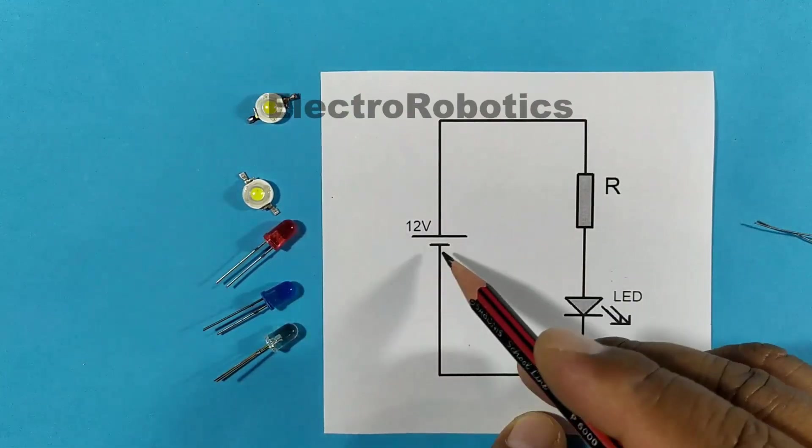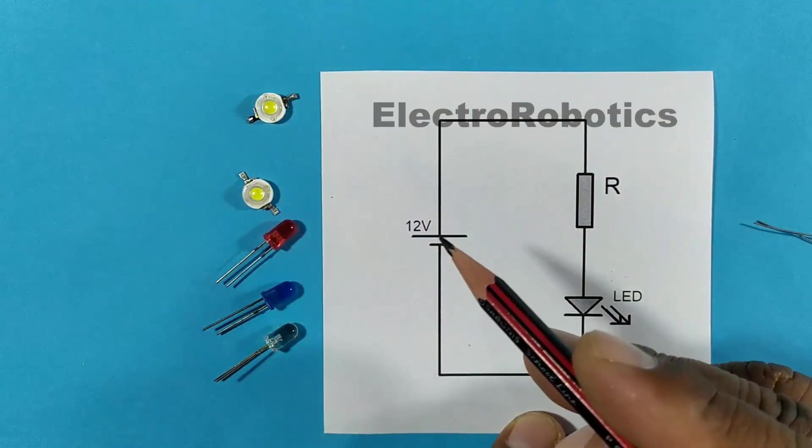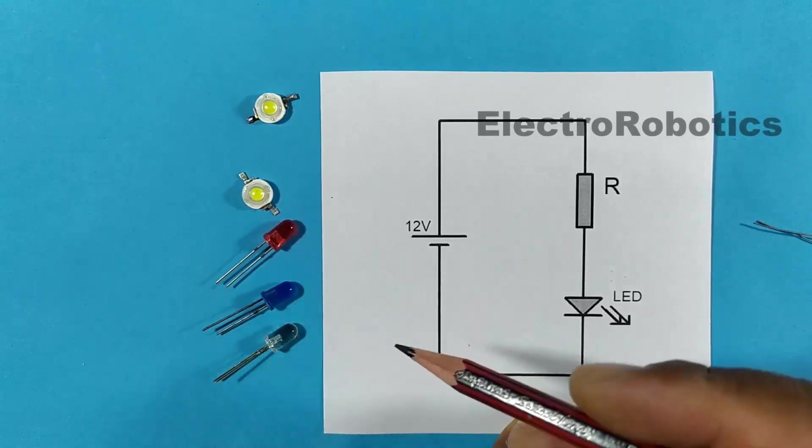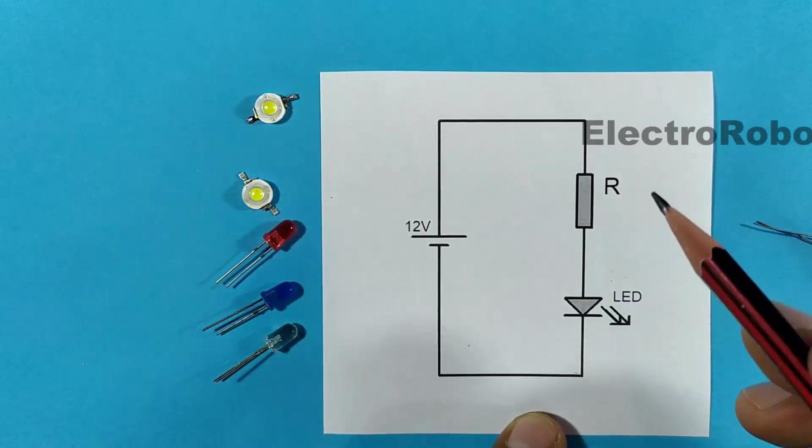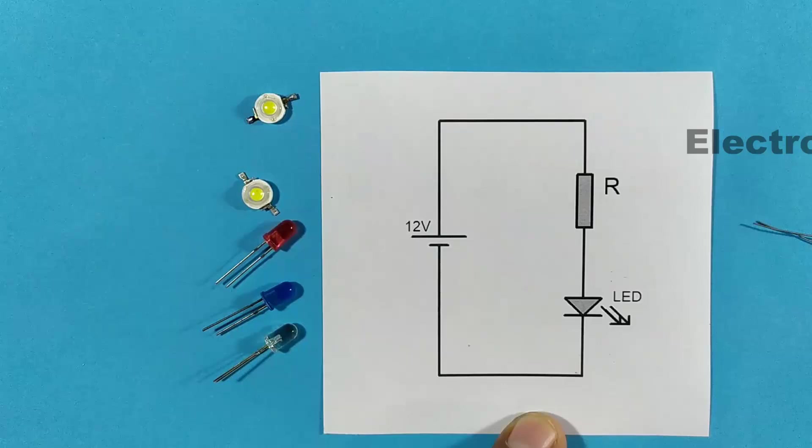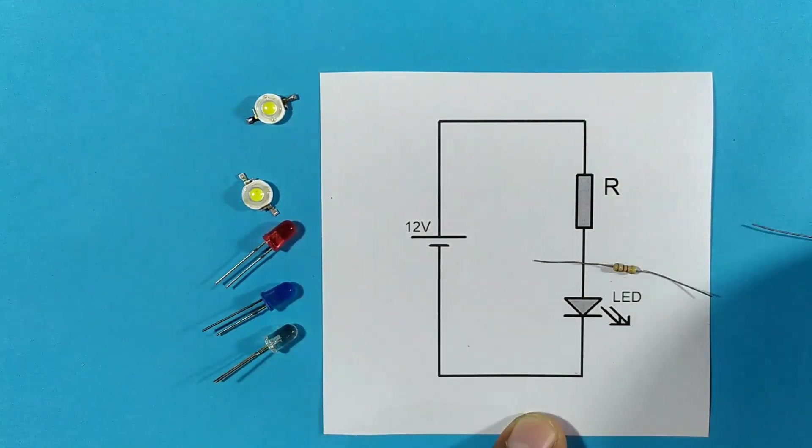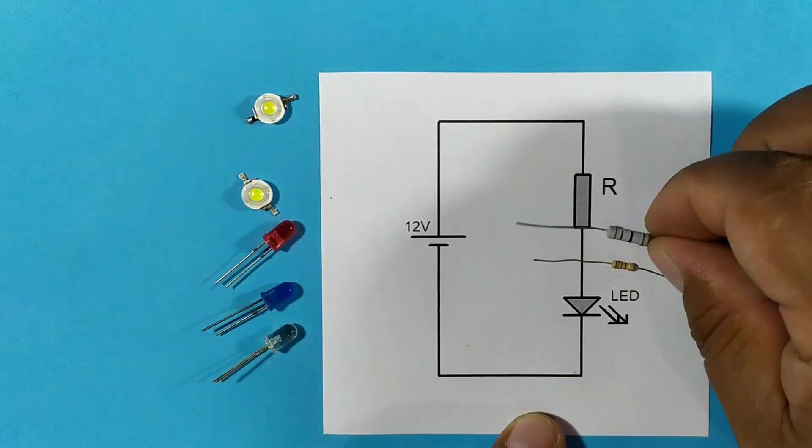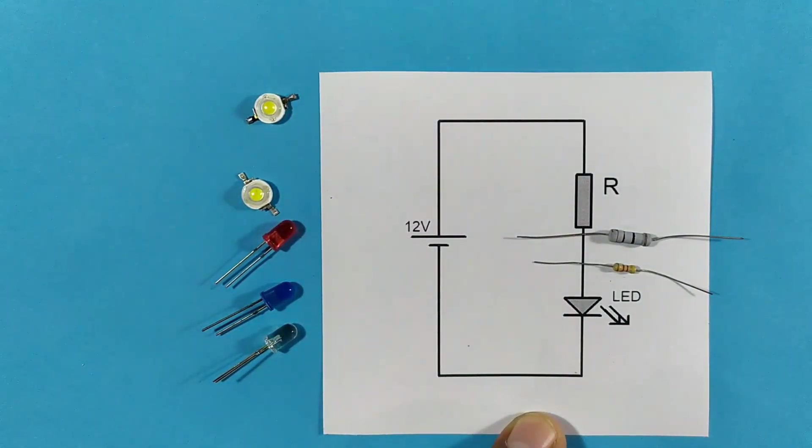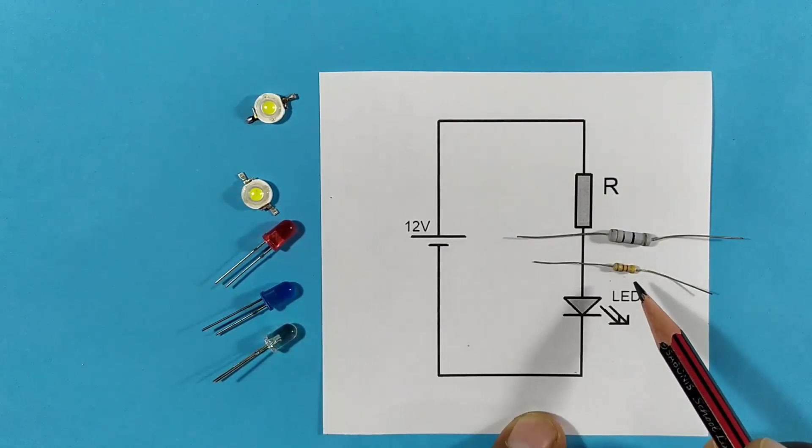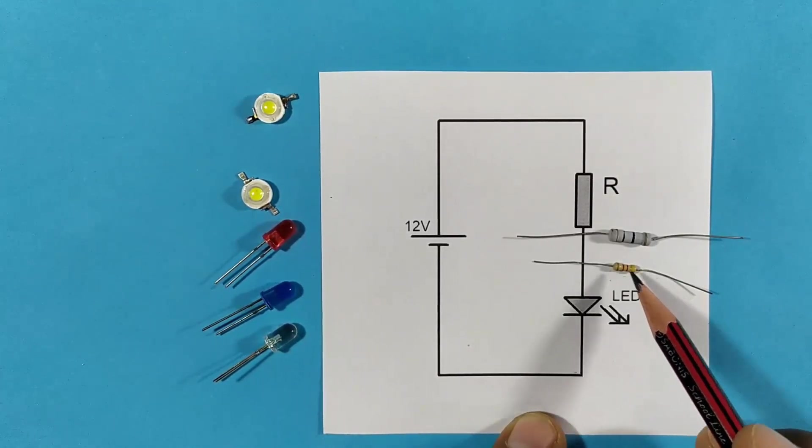It is not the same to use a voltage of 5 volts than a voltage of 12 volts or 24 volts. The resistance will vary both in value and in power or size. That is to say that in lower voltages, you can end up using only resistors of a quarter of a watt.